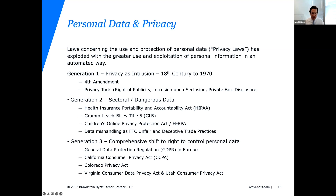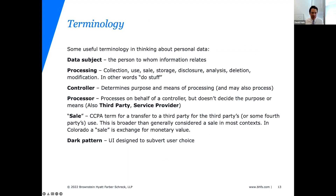Let's talk about some general terminology that has come up around privacy. Data subject is a term used by the EU and Colorado — the idea is that you designate the person to whom the information relates. Processing generally means doing stuff to information. Two important concepts in EU law and Colorado law: the controller is the company that decides what to do with the information, while a processor — which California also calls a third party or service provider — is directed by the controller to do something with the information.